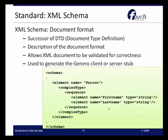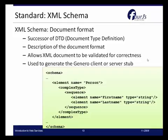The XML schema is a document format that provides validation of XML documents. It's a successor to the DTD (Document Type Definition) and provides a description of the document format, allowing XML documents to be validated for correctness. In Genero, it provides the information needed to generate the client or server stub — the code needed to interact with the service being used.